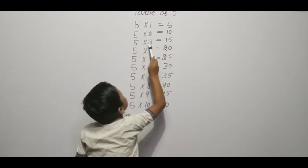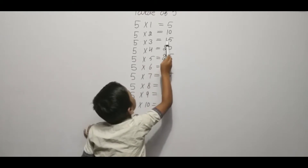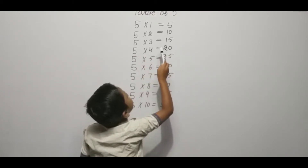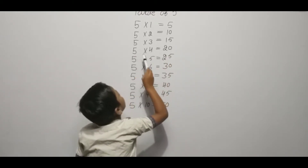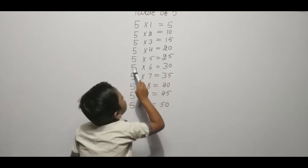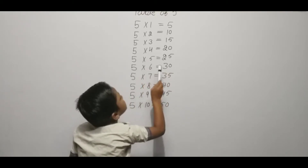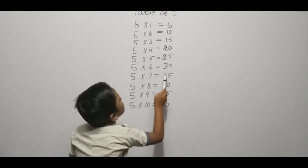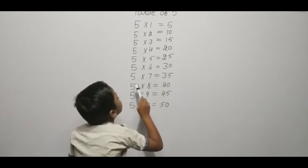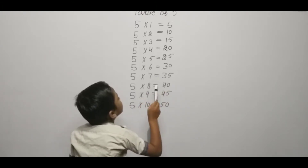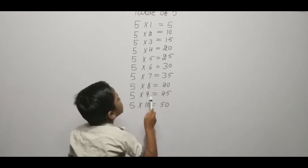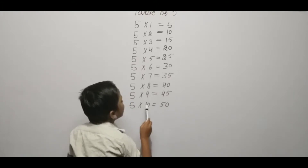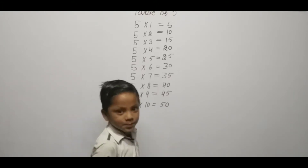Five six ja thirty, five seven ja thirty-five, five eight ja forty, five nine ja forty-five, five ten ja fifty. Thank you.